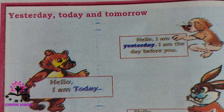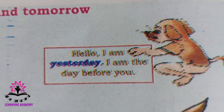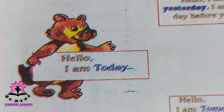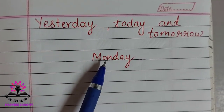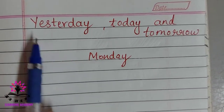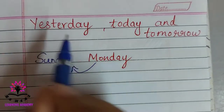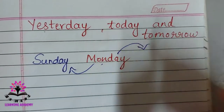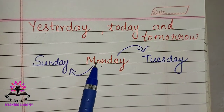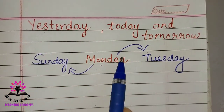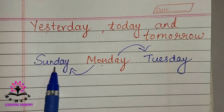Yesterday, today, and tomorrow. If today is Monday, the day before Monday is yesterday — that is Sunday. The day after Monday is tomorrow — that is Tuesday. So today is Monday, yesterday was Sunday, and the next day is Tuesday.